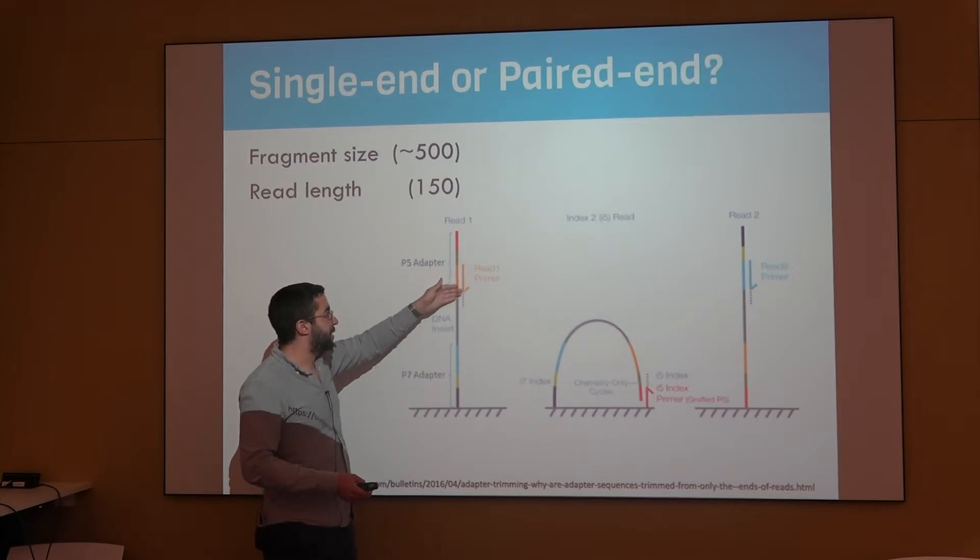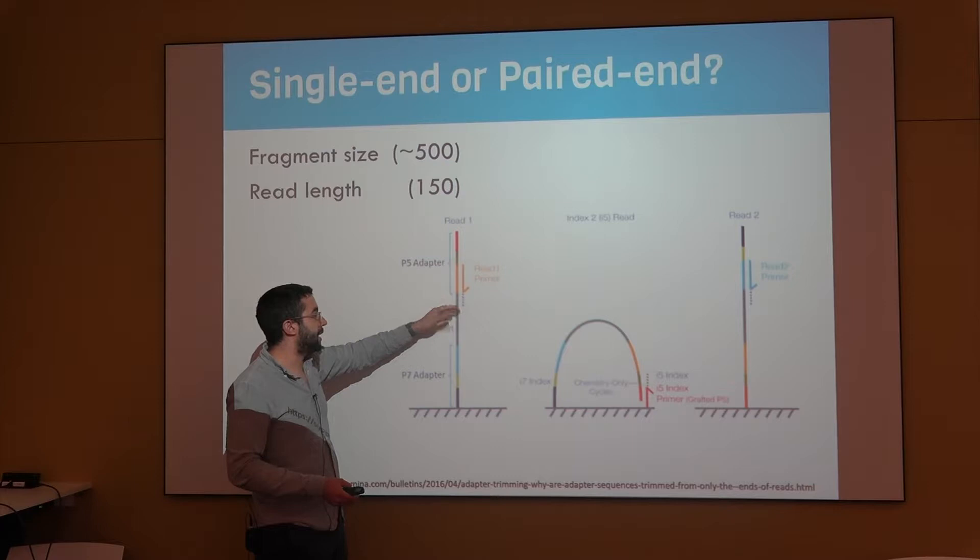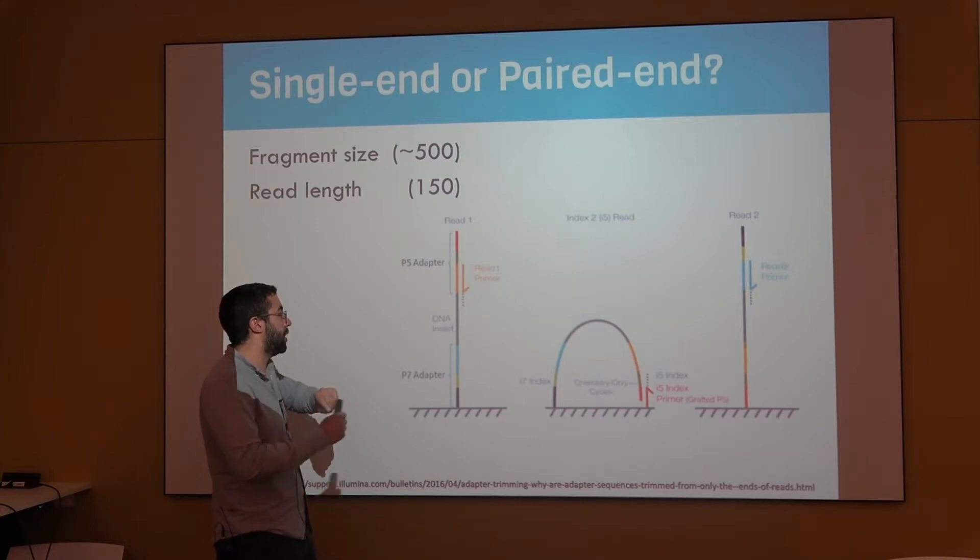You add the primer, you perform the sequencing, and then you read a little bit of this DNA. This fragment of DNA can be much larger than the read that you are getting at the end of the process.